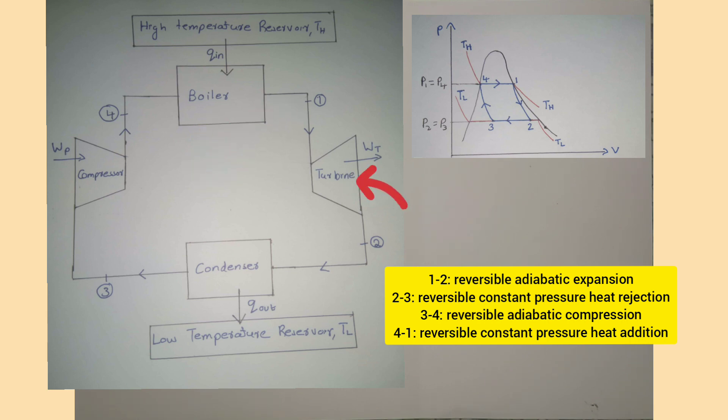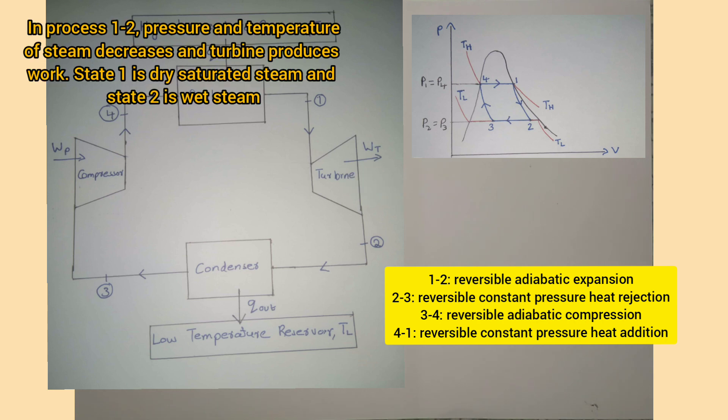Process 1 to 2 is reversible adiabatic expansion of steam in the turbine. It is shown in the PV diagram. Temperature decreases from TH to TL, and the turbine produces shaft work WT. Here state 1 is saturated vapor, which means 100% vapor, and state 2 is wet steam, which is a mixture of vapor and liquid.